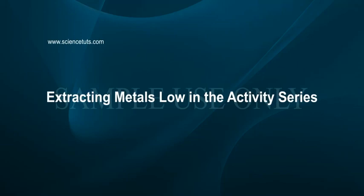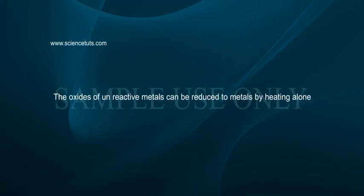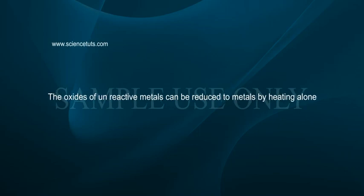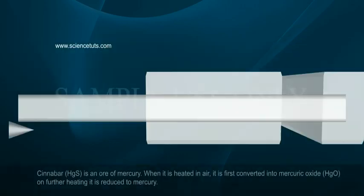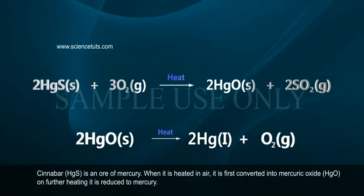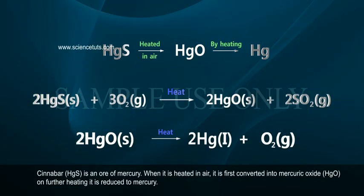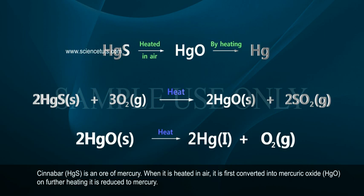Extracting metals low in the activity series. The oxides of unreactive metals can be reduced to metals by heating alone. Cinnabar (HgS) is an ore of mercury. When it is heated in air, it is first converted into mercuric oxide (HgO). On further heating, it is reduced to mercury.